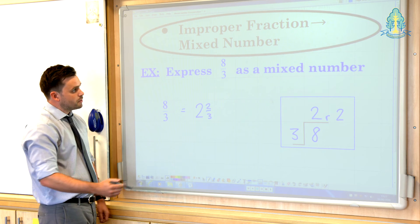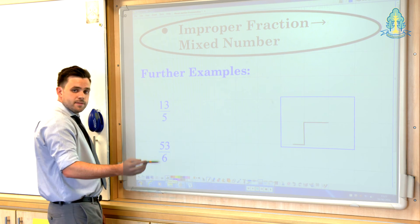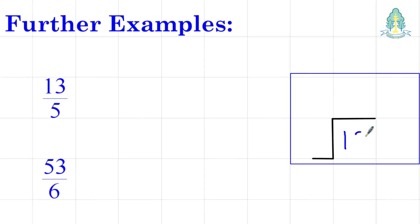And further examples again. 13 fifths, treat it as a division. 13 fifths means 13 divided by 5, which the pupils can carry out as normal, giving us 2 remainder 3. 2 remainder 3, whole number part of 2, and the remainder 3 would represent 3 with a denominator of 5. 2 and 3 fifths as a mixed number.